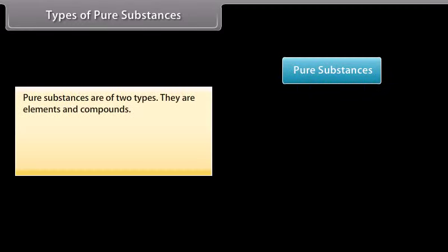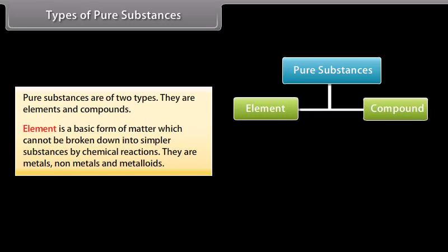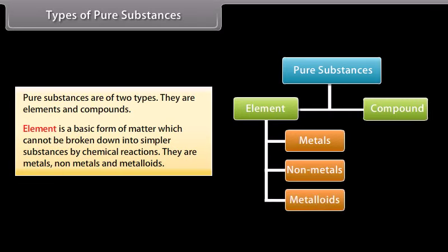Types of pure substances. Pure substances are of two types: elements and compounds. Element is a basic form of matter which cannot be broken down into simpler substances by chemical reactions. They are metals, non-metals, and metalloids.